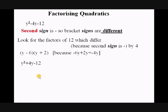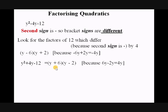Looking at this one: again the bracket signs are going to be different, and we're looking for the factors of 12 which differ by 4 — just as before. These expressions are very similar; only the sign in front of the 4y has changed. We get the same two factors, 6 and 2. But this time, because we want plus 4y, the plus sign goes in front of the biggest factor, giving (y + 6)(y − 2), where 6y − 2y = 4y in the middle.